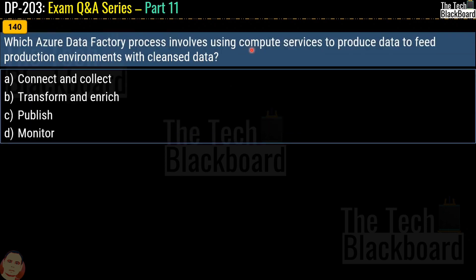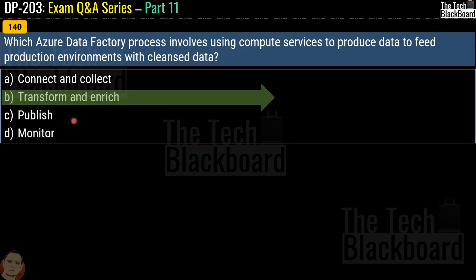Question 140: Which Azure Data Factory process involves using compute services to produce data to feed the production environment with cleansed data? Options are connect and collect, transform and enrich, publish, or monitor. The correct answer is option B, transform and enrich.